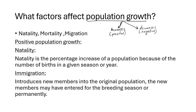The factors that affect population growth are natality, mortality, and migration. We already discussed migration — it is the movement of species either into or out of the population. Natality is otherwise known as birth rate, referring to how many new species are born. Mortality is the death rate — how many species are dying in that population.